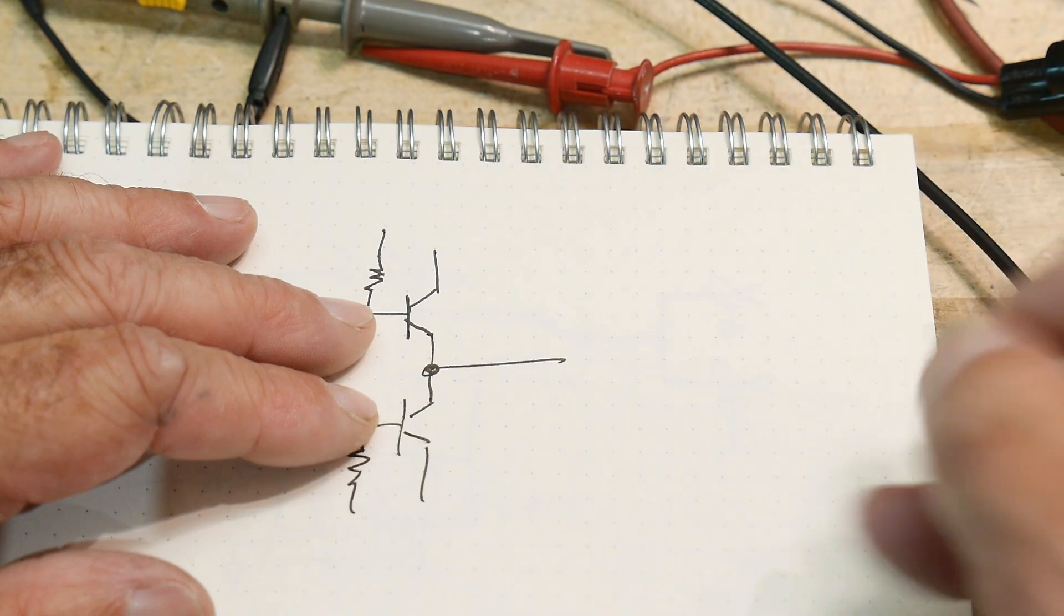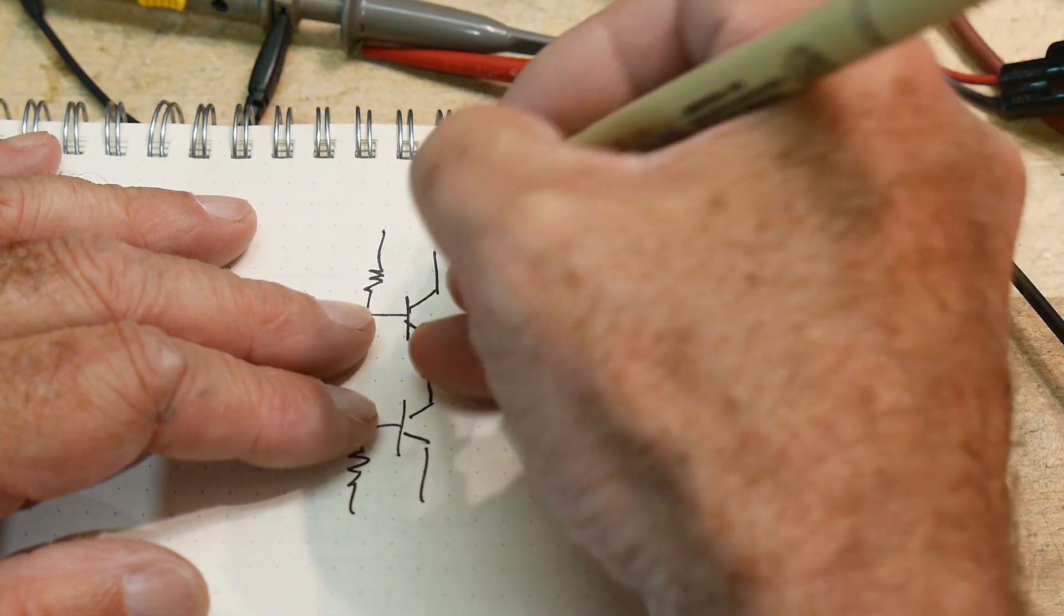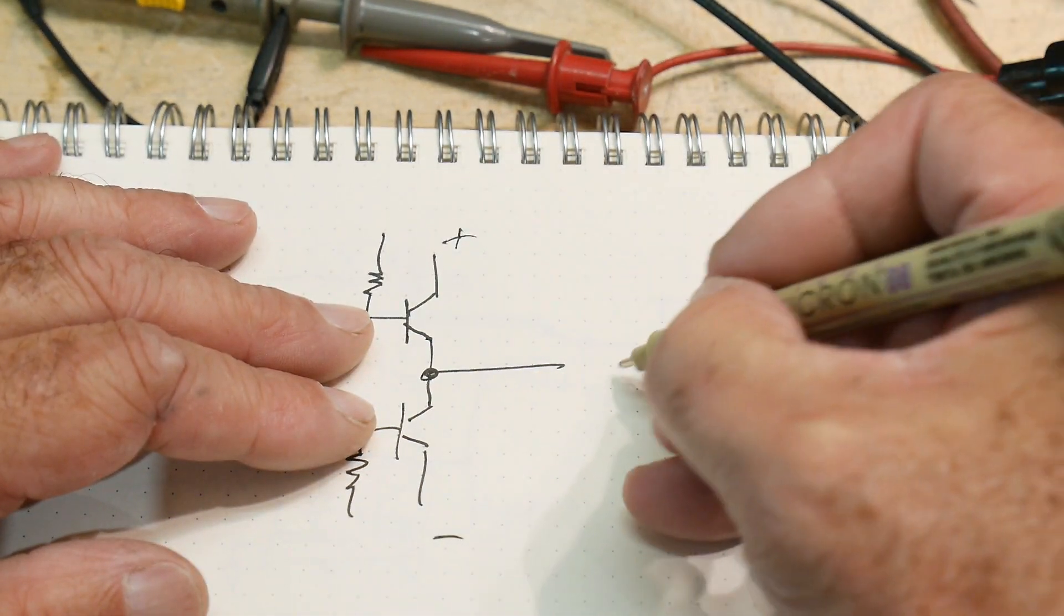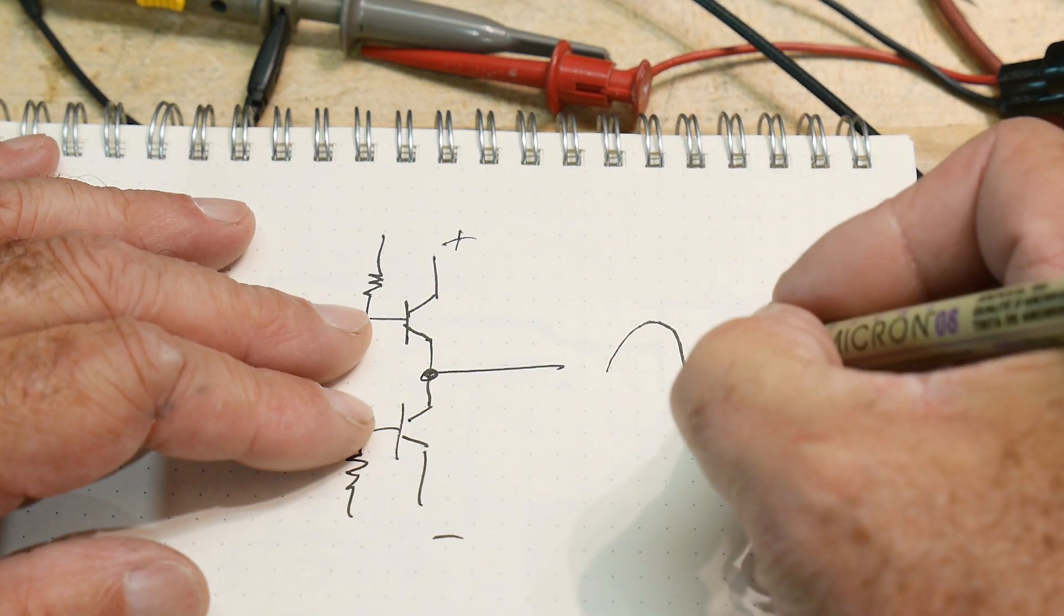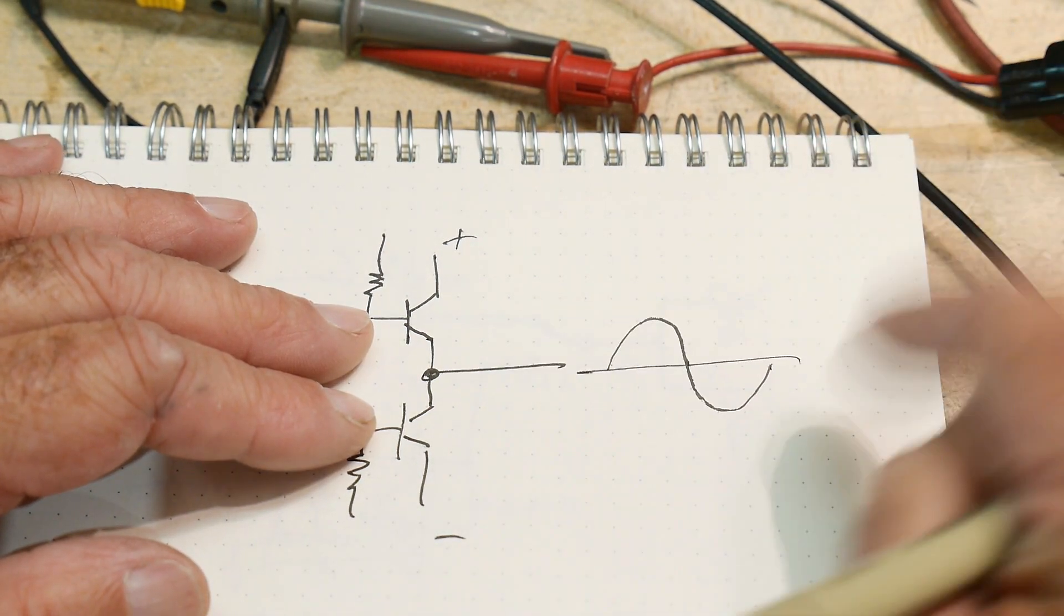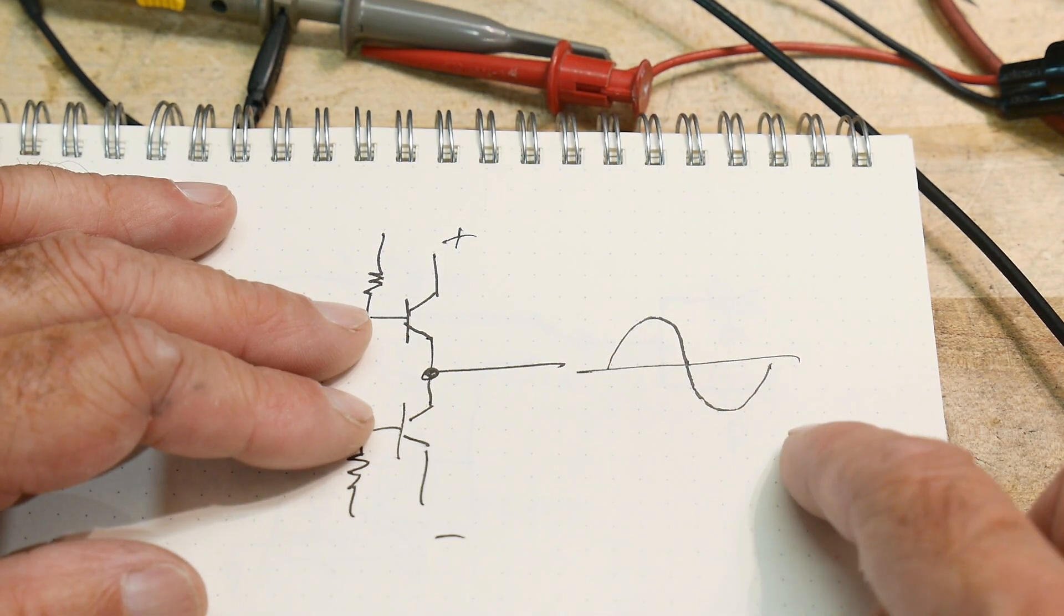You've got two transistors that are in push-pull, and one of them goes to a plus and one of them goes to a minus, so one of them does the positive part and then one of them does the negative part. And then hopefully you end up with a nice sine wave on the other side.